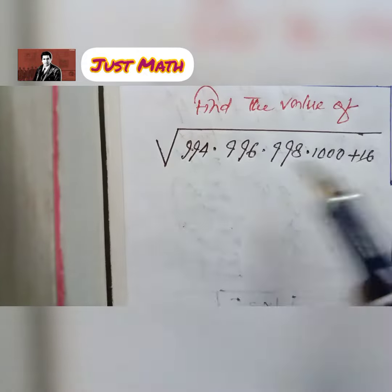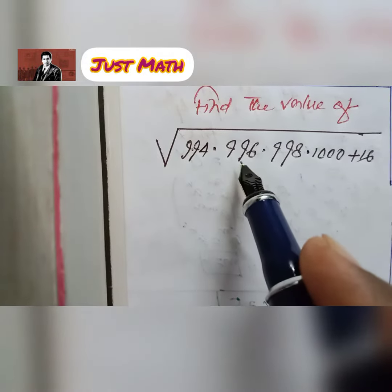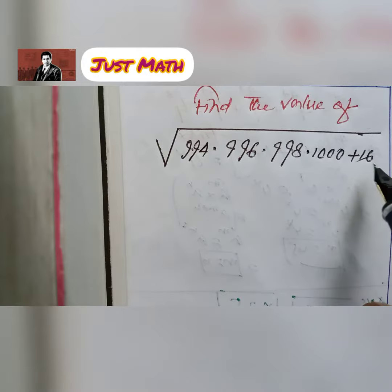Find the value of square root of 994 × 996 × 998 × 1000 plus 16.